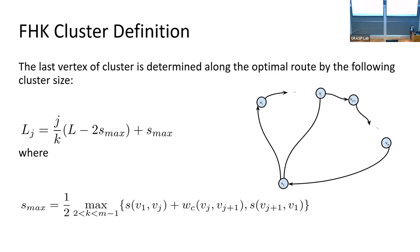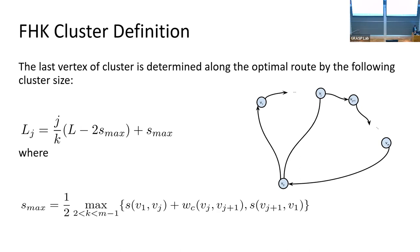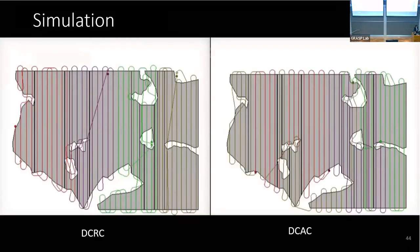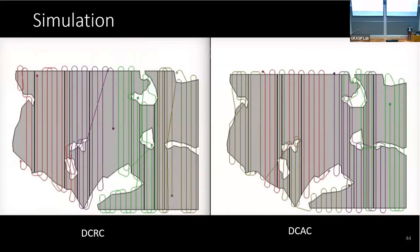The alternative approach is the opposite: cluster the environment first using the same clustering approach, then solve the single-robot coverage problem for each region. Experiments showed that the routing-first approach produces more optimal solutions. Comparing the maximum coverage cost per robot, with five and ten robots, routing-first and clustering-second performs better.